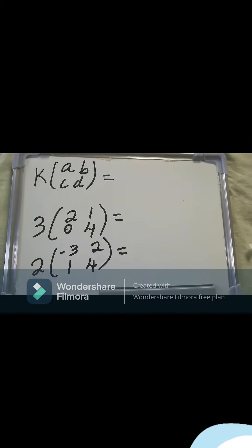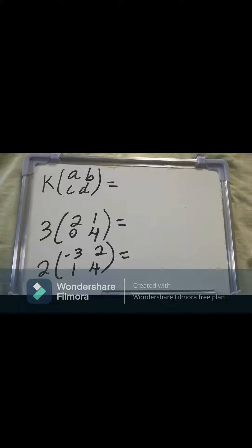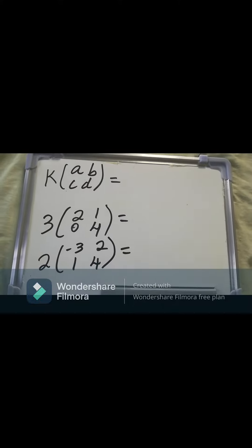It's K of A over D, gamma, alpha, better known as scalar multiplication. Now what scalar multiplication is, is multiplying a whole number by a matrix.